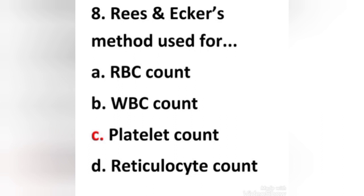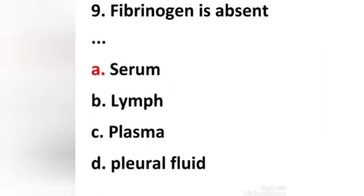Next question: Rees and Ecker method is used for — (a) RBC count, (b) WBC count, (c) platelet count, (d) reticulocyte count. The right answer is option C: platelet count. Rees and Ecker method is used for platelet counting, and the composition of platelet counting fluid is trisodium citrate, brilliant cresyl blue, 40% formalin, and distilled water.